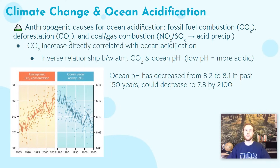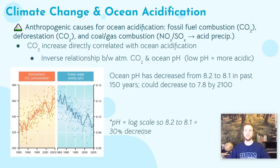One final point: a change from 8.2 to 8.1 may not seem like a big deal — just 0.1, what's the big deal? But we have to remember that the pH scale is a logarithmic scale. A small shift on a log-based scale represents a larger change than it might seem. A change from 8.2 to 8.1 is actually a 30% decrease in pH, or a 30% increase in acidity. The ocean is 30% more acidic now than it was 150 years ago, and that is problematic.